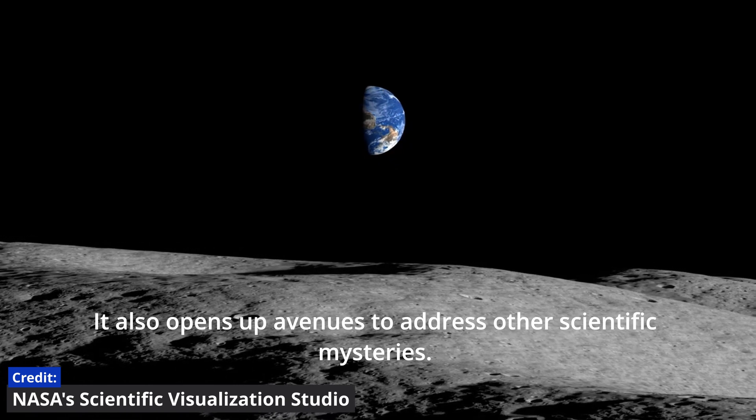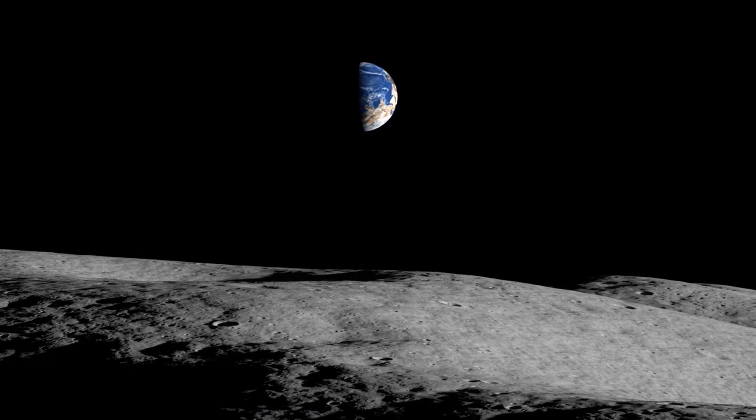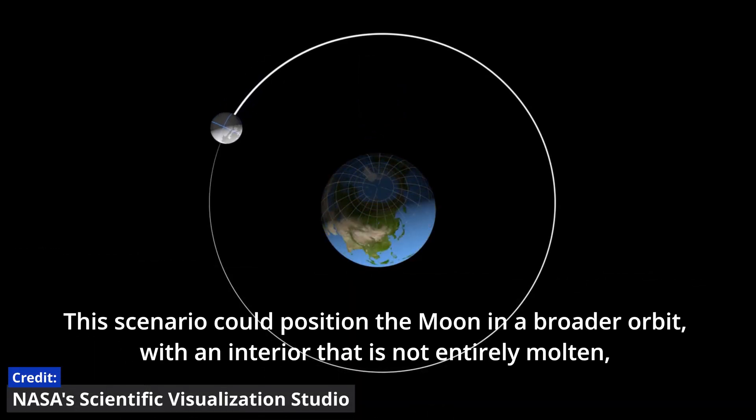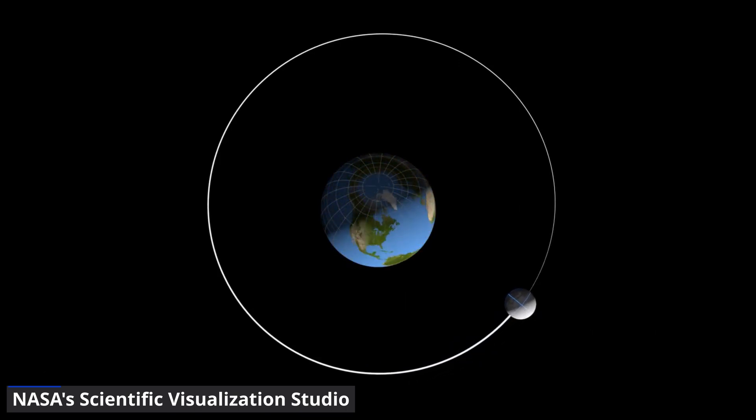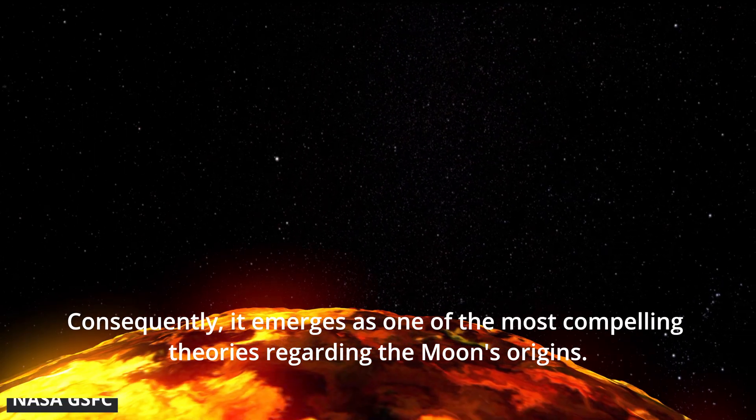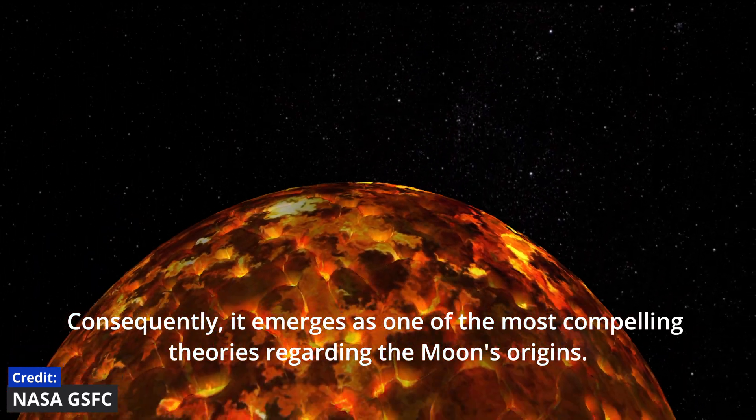It also opens up avenues to address other scientific mysteries. This scenario could position the Moon in a broader orbit, with an interior that is not entirely molten, potentially elucidating phenomena such as the Moon's tilted orbit and thin crust. Consequently, it emerges as one of the most compelling theories regarding the Moon's origins.